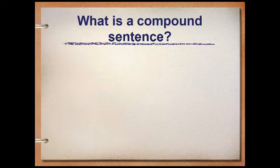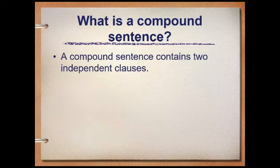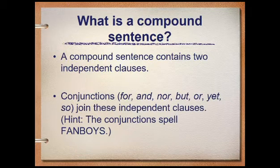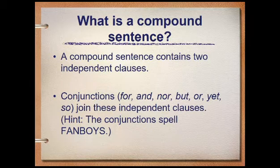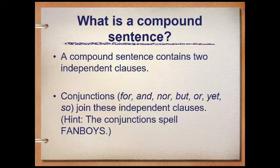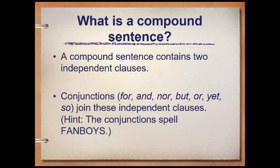What is a compound sentence? A compound sentence contains two independent clauses. In a compound sentence we will be using a conjunction. These are the coordinating conjunctions: for, and, nor, but, or, yet, and so. We will be using either of them to combine our two independent clauses, and you need to remember to put a comma after your first clause.